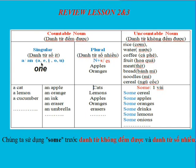For singular nouns, you use the article 'a' or 'an' before the noun. 'An' is used before nouns beginning with vowels. You can also replace 'a' and 'an' with the number 'one'. For plural nouns, you add -s or -es after the noun. Below are examples of using a, an, and plural nouns.